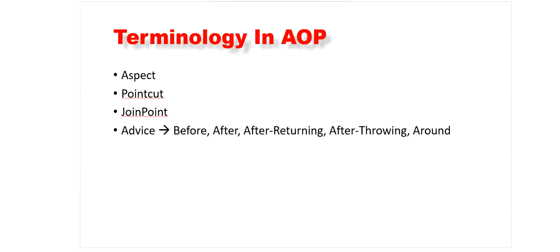These are the main terminologies used in AOP. First is Aspect - a module that encapsulates advice and pointcuts and provides a cross-cutting concern. An application can have any number of aspects. Second is Pointcut - an expression that selects one or more join points where advice is executed. We use pointcut to define our expression. Third is Join Point - a point in the application where we apply an AOP aspect.